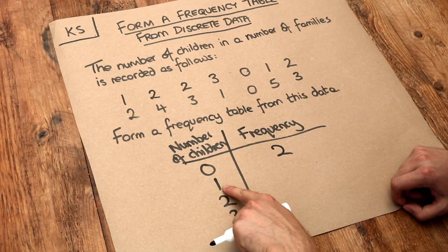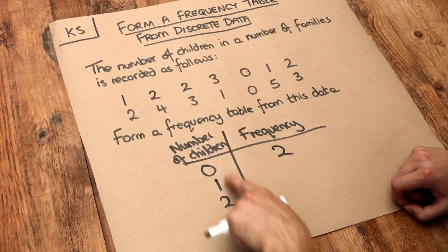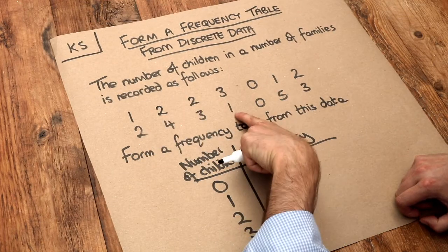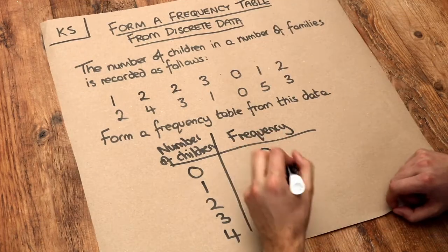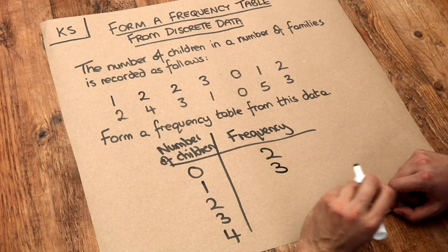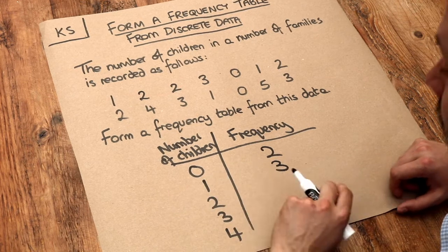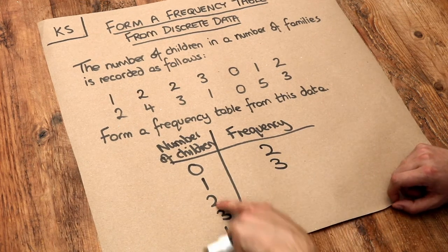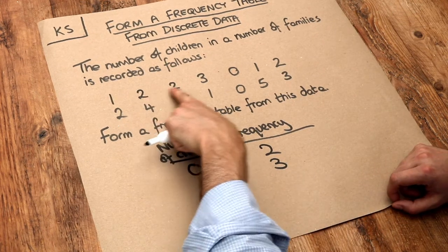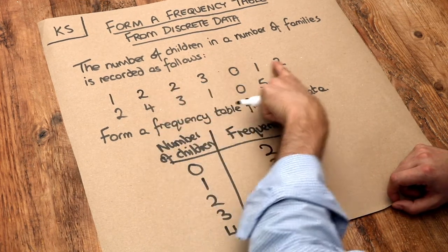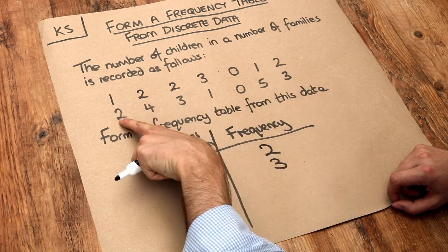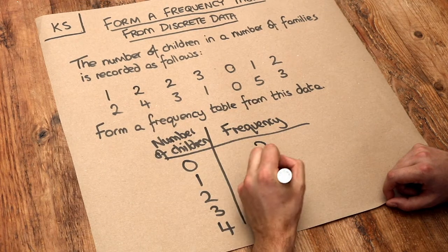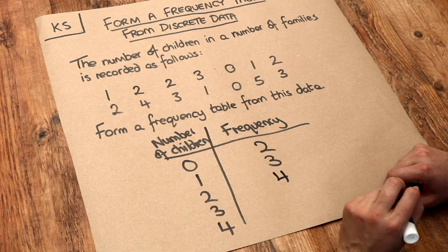How many families have one child? Well we can see one, two, three. So the frequency is three — that's how common the value of one is. How many families have two children? We've got one, two, three, four. So the frequency is four.